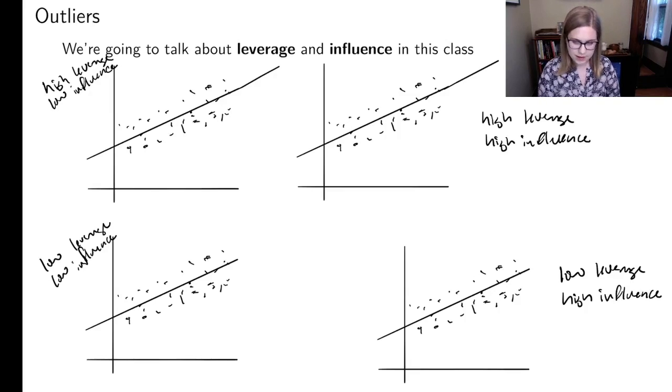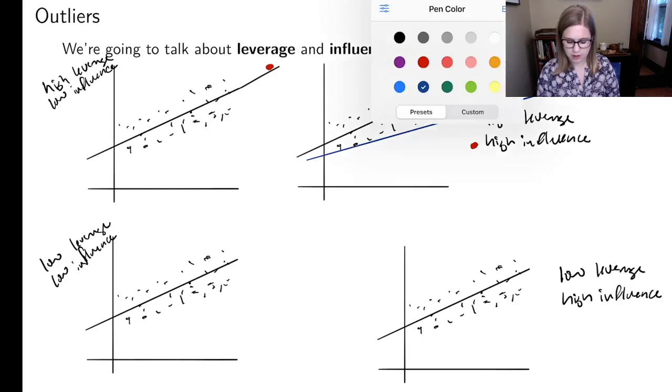So I'm going to start talking about high leverage, low influence. That would be a point out here. So it is outside the range of the rest of the data, but it's very close to the regression line. So it doesn't have a lot of influence on the regression line. Versus high leverage and high influence is going to be outside the range of the data, but it is also going to have a big influence on the regression line. If we had just the points that I have colored in black, maybe we would get that black regression line. But perhaps if I added in this red point, maybe the line would get dragged down, something like that. So it could influence my regression line.